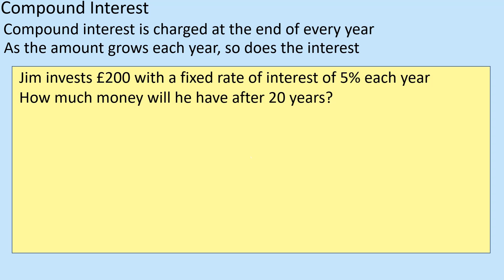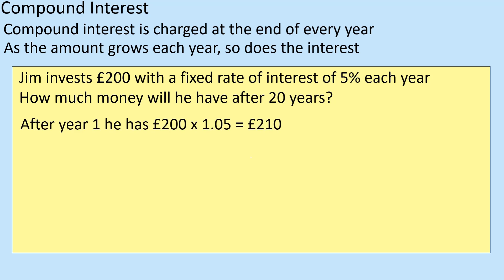So if Jimmy invests £200 with a fixed rate interest of 5% each year, how much will he have after 20 years? The 5% is a fixed rate — of course we are talking compound interest. So after year one he has 200 times 1.05.